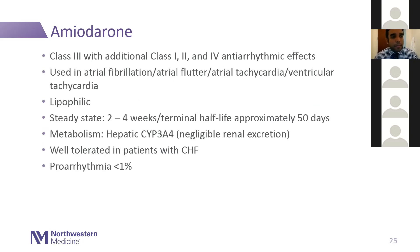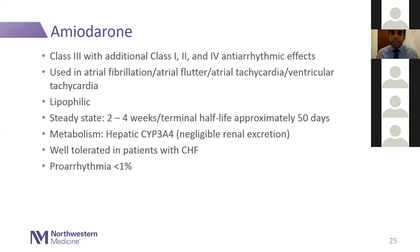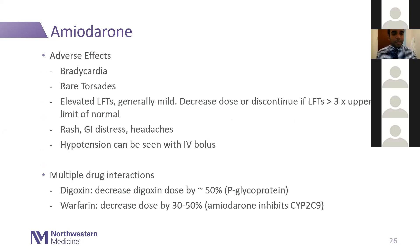Moving on to amiodarone — class 3 but really with multiple class effects: class 1, 2, and 4 antiarrhythmic effects. Used in atrial fibrillation, atrial flutter, atrial tachycardia, and VT. It's very lipophilic, achieves steady state in about two to four weeks, and has a terminal half-life of about 50 days — it sticks around in the system for a long time. Metabolism is hepatic through CYP3A4 with negligible renal excretion. It is very well tolerated in patients with heart failure and has very low risk of pro-arrhythmia. Adverse effects include bradycardia, rare torsades, elevated LFTs — if LFTs rise more than three times the upper limit of normal, decrease the dose or discontinue. Other side effects include rash, GI distress, and headaches. When given as an IV bolus, monitor for hypotension.